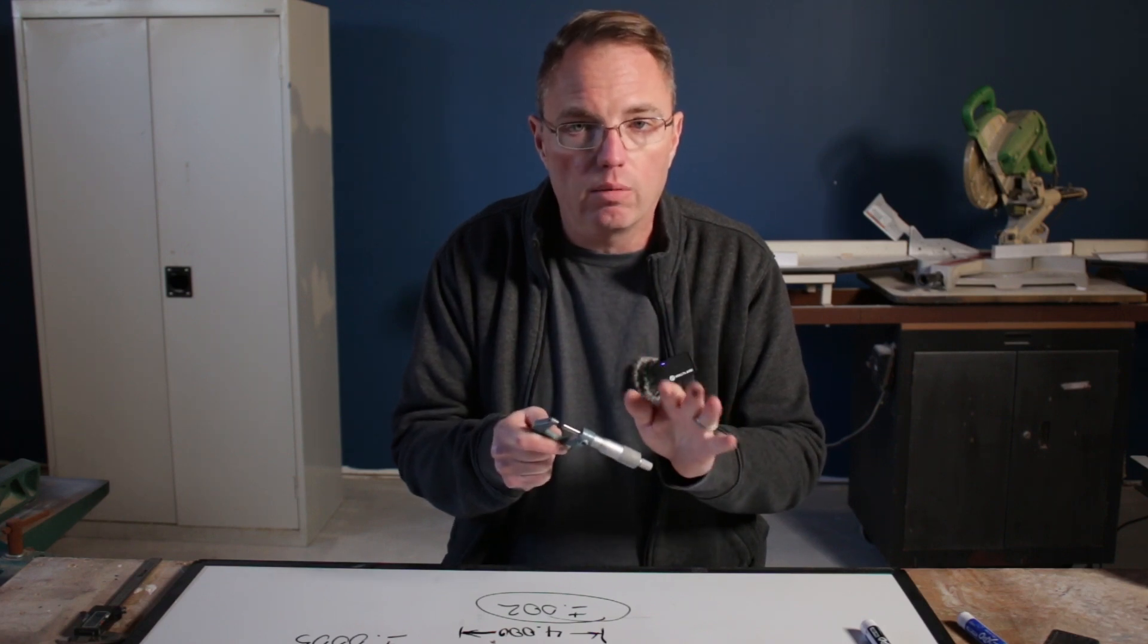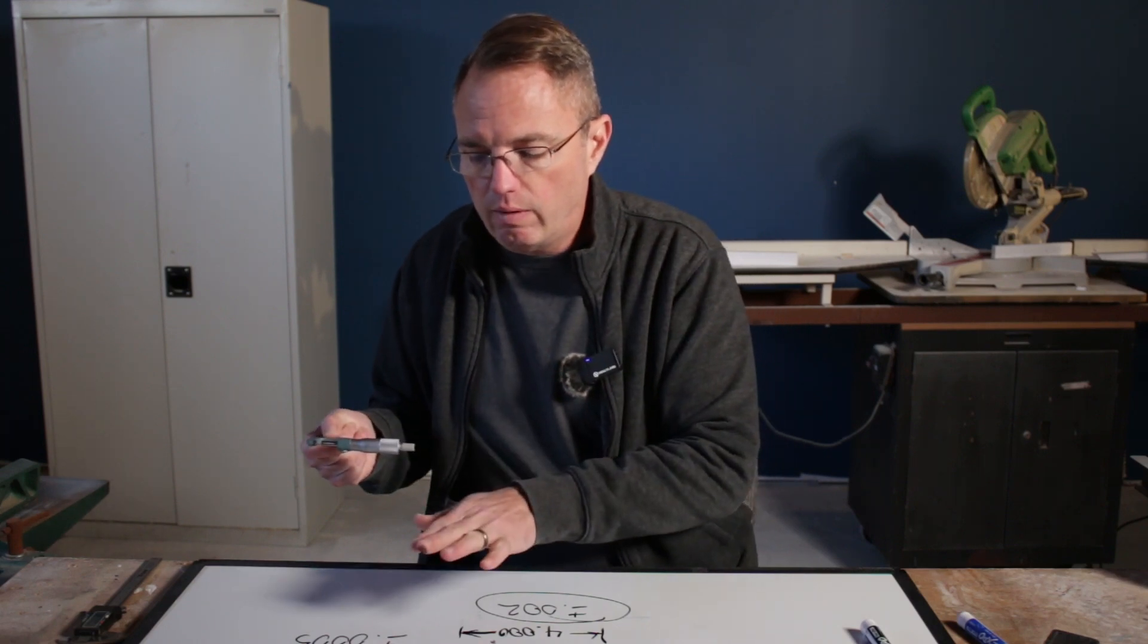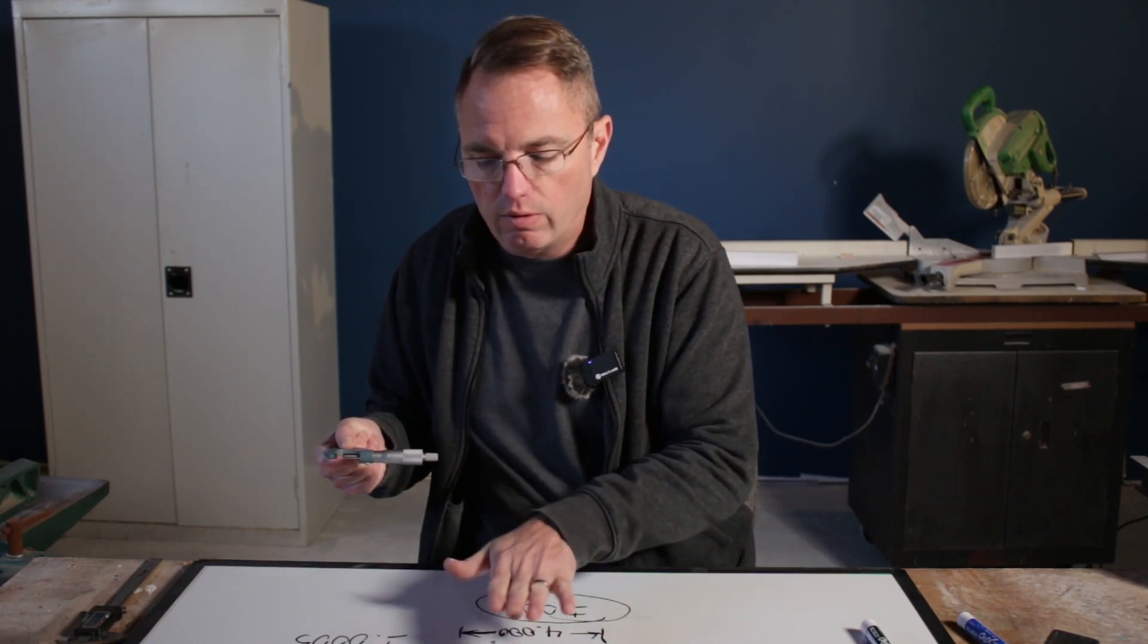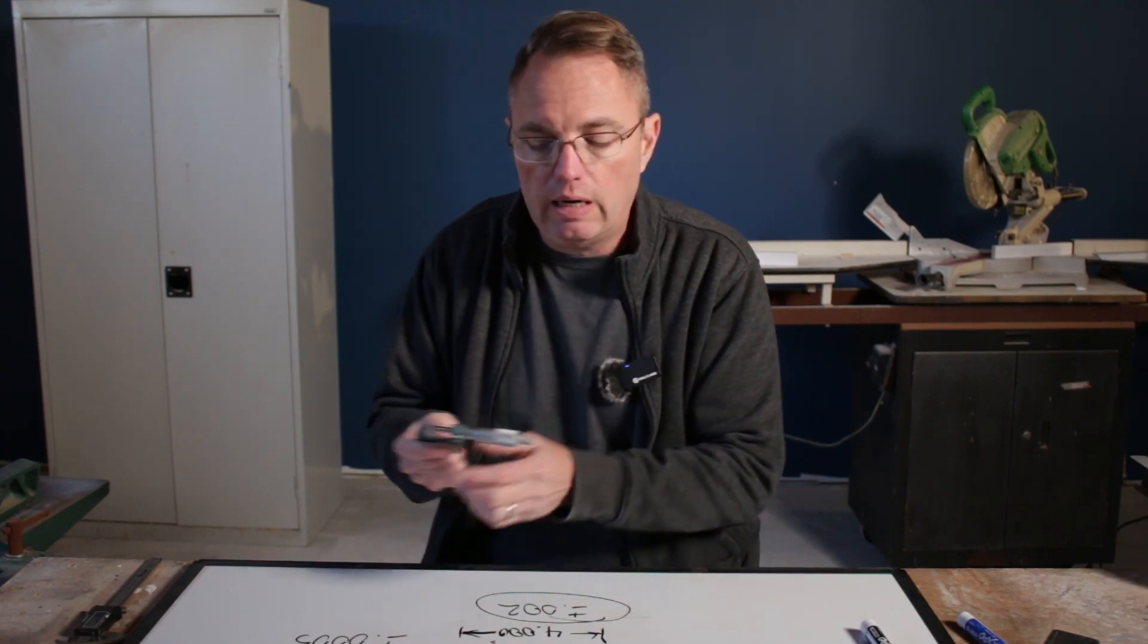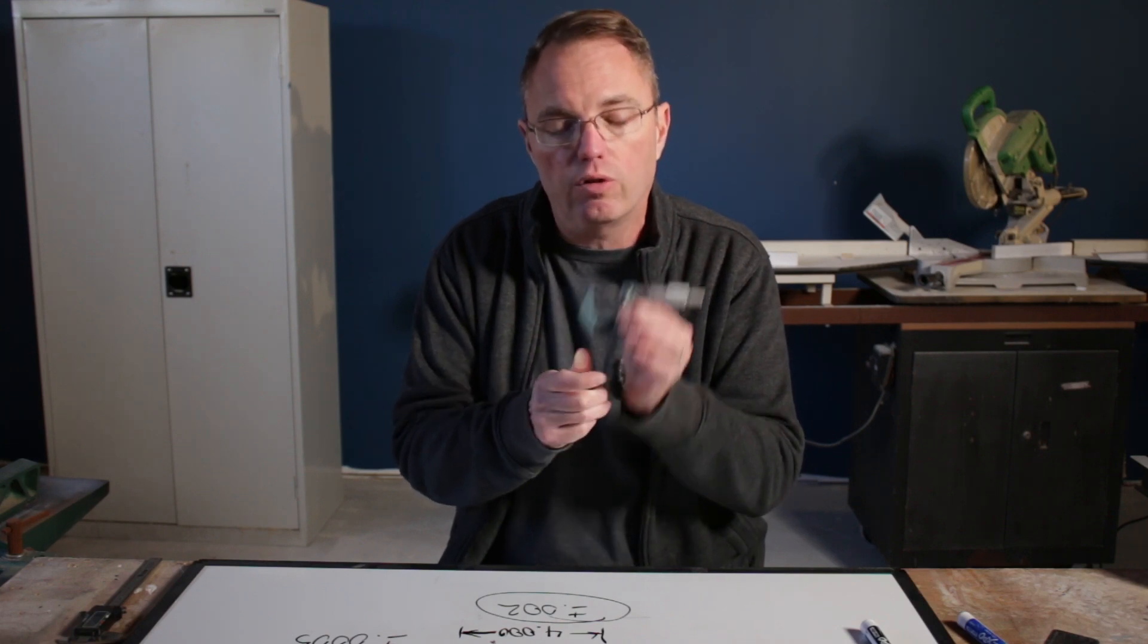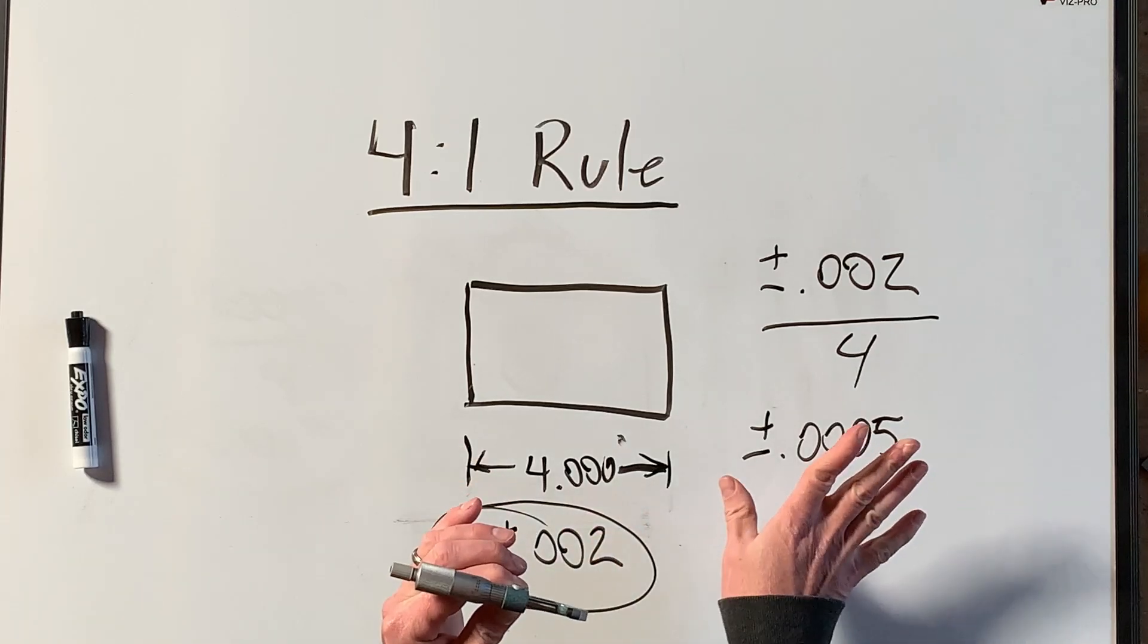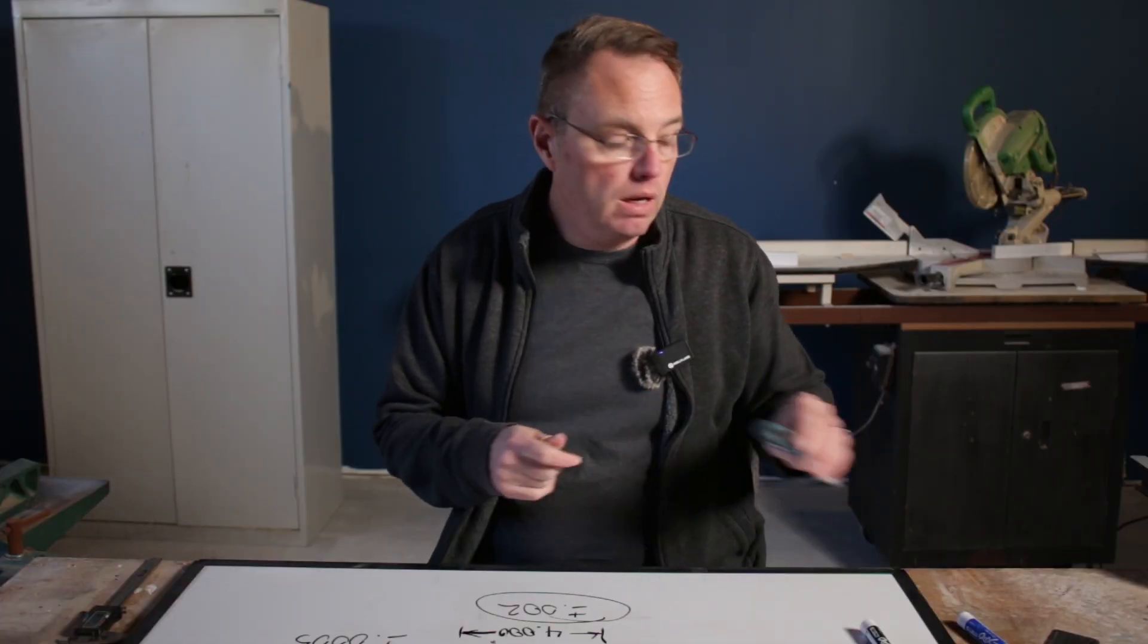So in this case, we need a measurement instrument to measure this part of plus or minus five ten-thousandths of an inch, and this is plus or minus one ten-thousandths of an inch, so this will work and be plenty accurate for this.